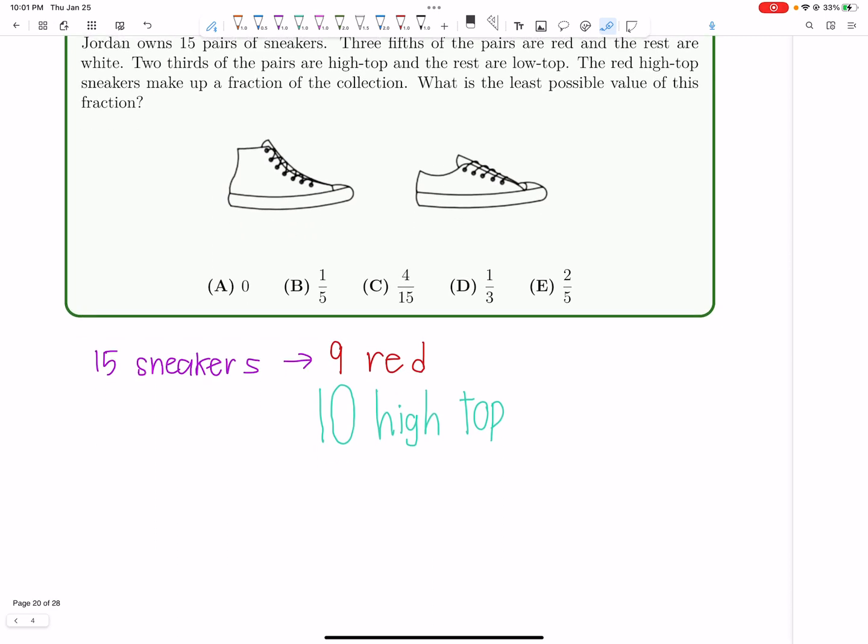Well, there's a total of 15 pairs of sneakers. We know nine are red. We know 10 are high-top. We want to minimize this overlap. So you might be wondering, what if this overlap is just zero?